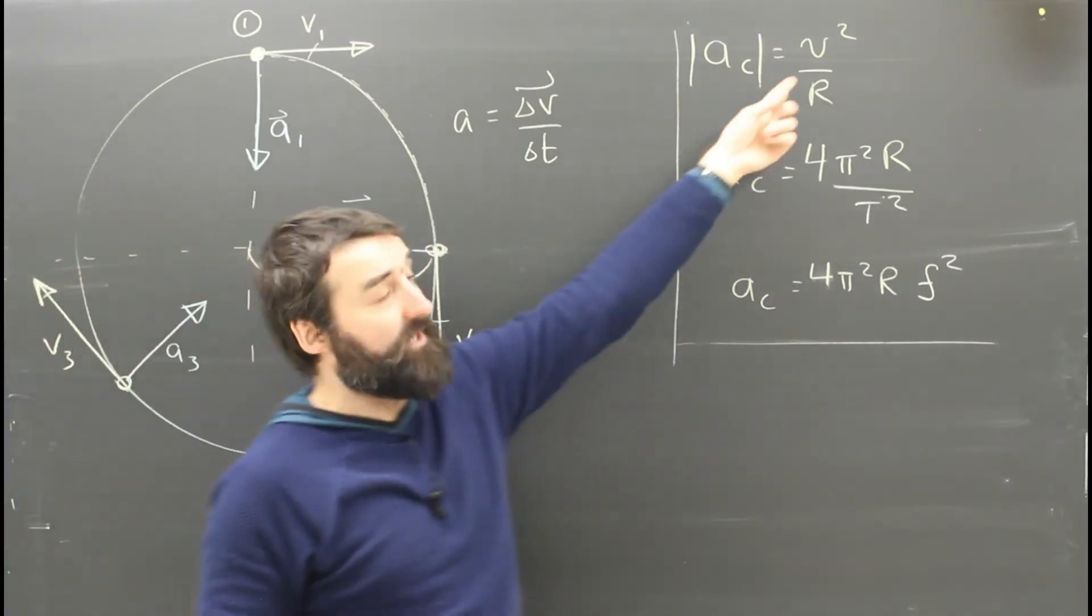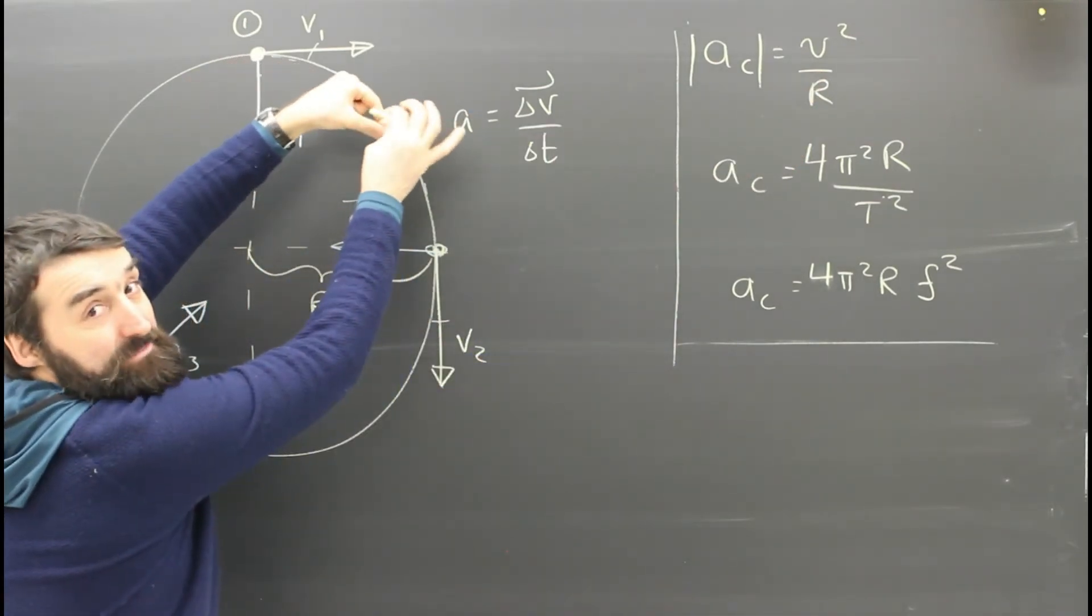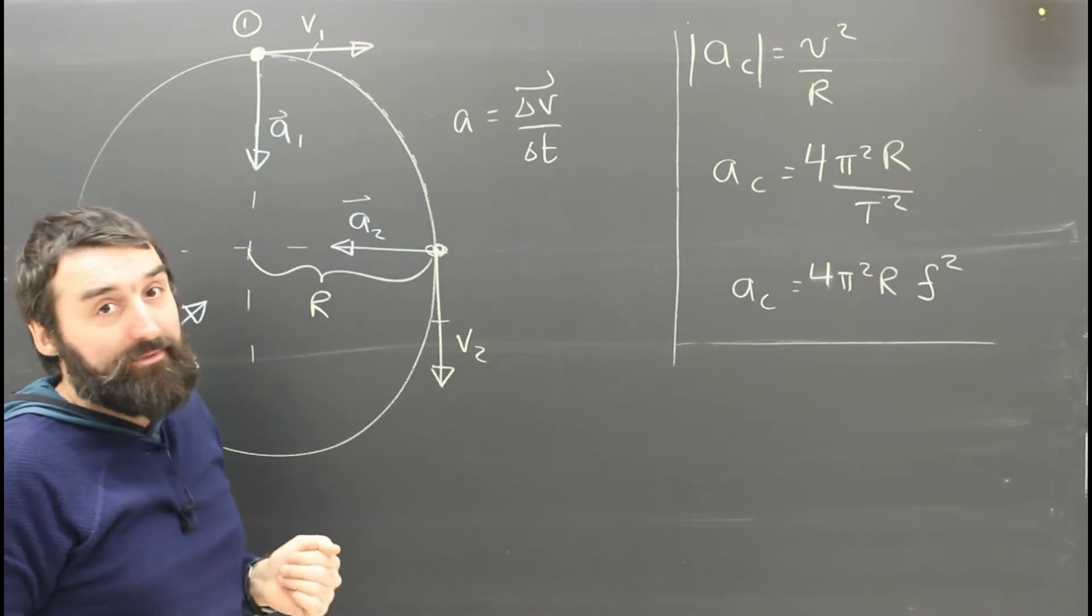This is assuming it's going at a constant speed for the whole circle, or the instantaneous speed at any one spot. But that's no big deal.